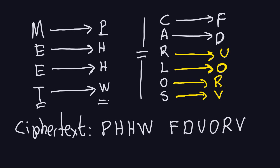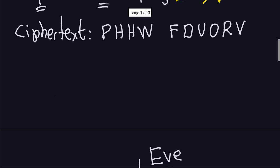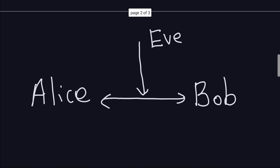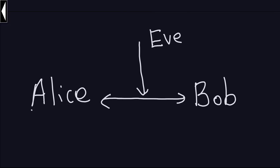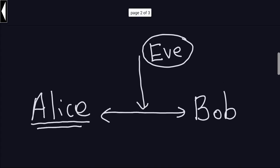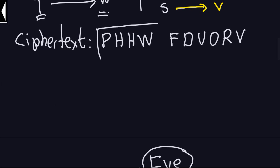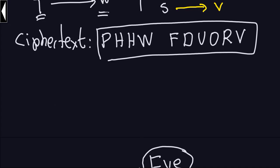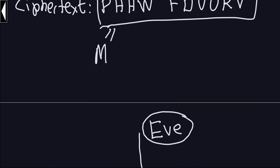Now what is the situation? We have the cipher text, and we send that cipher text through the insecure channel. So we have Alice — she is the one who wants to send that message to Bob. She's going to send the cipher text, not the plain text, because Eve is always listening to that channel. Let's call that cipher text M, so M stands for the whole message P-H-H-W-F-D-U-O-R-V.